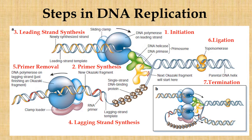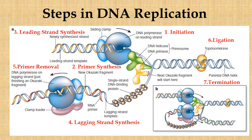The fifth step is primer removal. RNA primers present on the newly formed strands need to be replaced by DNA. This activity is performed by the enzyme DNA polymerase I, which specifically removes the RNA primers via its 5' to 3' exonuclease activity. Finally, a subunit of DNA polymerase proofreads the new DNA. The sixth step is ligation: an enzyme called DNA ligase seals up the fragments into long continuous strands using ATP as a source of energy.